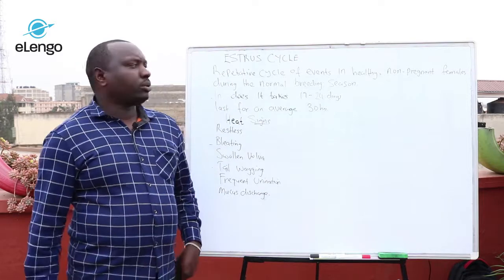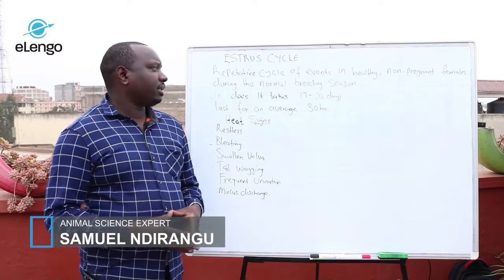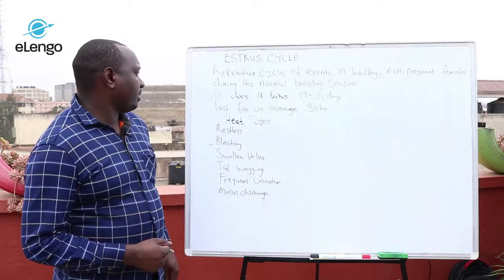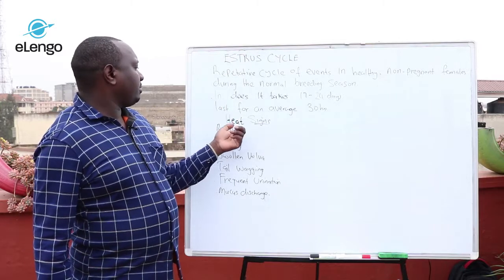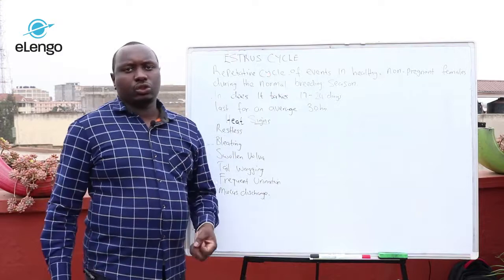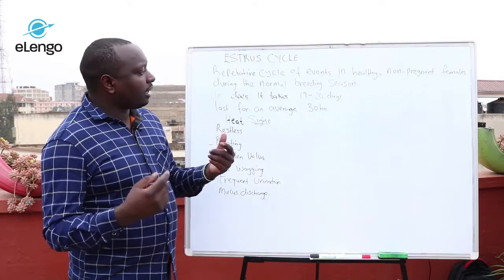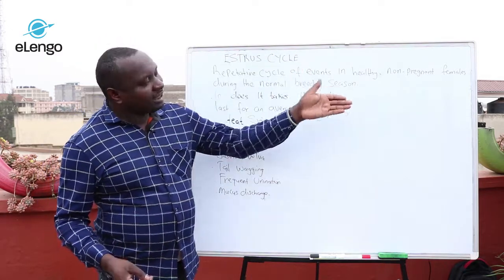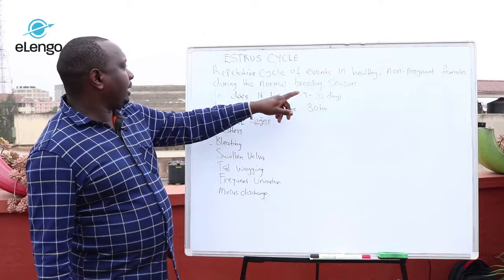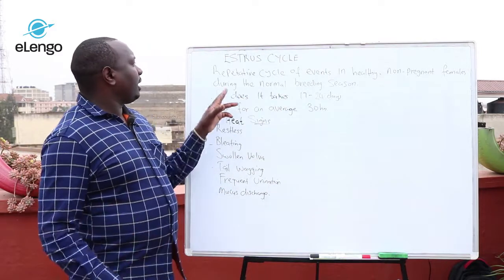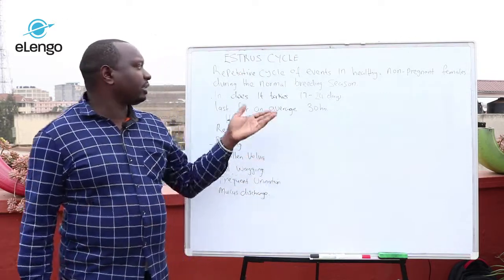Let's look at the estrus cycle and what it means. The estrus cycle is a repetitive event in healthy non-pregnant females. During the normal breeding period, the female shows signs of being in heat — that is, when the female needs the male for reproduction. This particular cycle is hormonal, influenced by hormones such as progesterone and estrogens, which are responsible for this particular behavior.